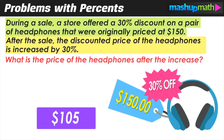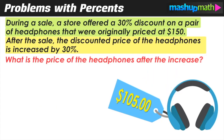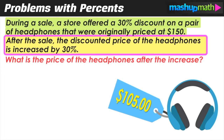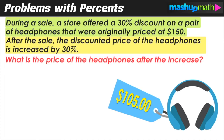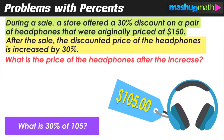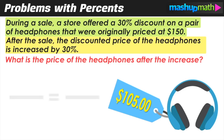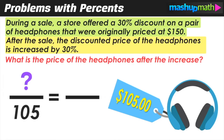Now we're ready to move on to the second part of this problem. After the sale, the discounted price is increased by 30%. We now use the new sale price of $105 and figure out what 30% of 105 is, using the same approach of setting up a proportion and cross multiplying.